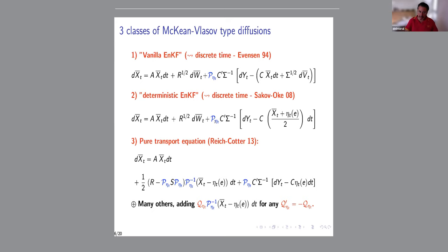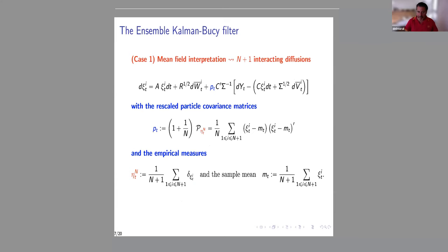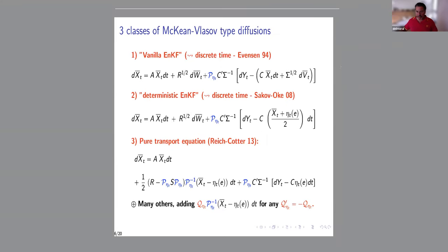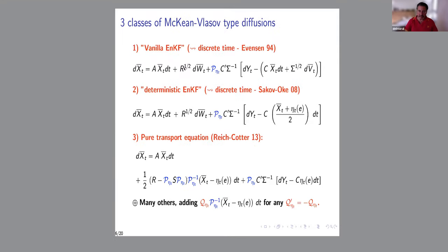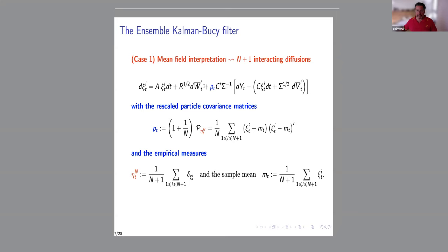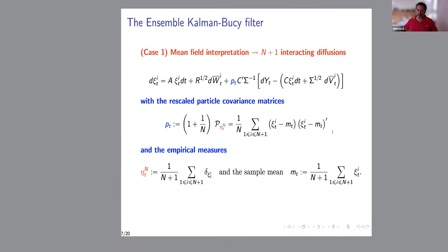There are infinitely many diffusions that work; you can add a skew-symmetric matrix term and it also works. To sample any of these, you need to sample the noises or do the deterministic evolution, but at each time step you need to compute the covariance of the law of the process. The ensemble Kalman filter approach: take one of these formulations, sample the noises, and instead of the true covariance, plug in the empirical covariance matrix.